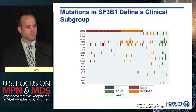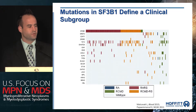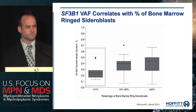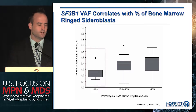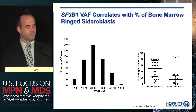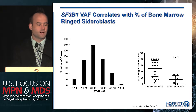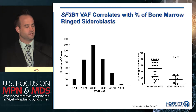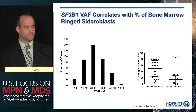SF3B1 defines a molecular and clinical subgroup with a relatively indolent prognosis. SF3B1 is strikingly concordant with the presence of ring sideroblasts. Malcovati looked at the allele burden of SF3B1 and found that only patients with a lower VAF sometimes have ring sideroblasts less than 15%, which is diagnostically relevant. A higher allele burden of SF3B1 predicts for a higher percentage of bone marrow ring sideroblasts, with the few patients lacking ring sideroblasts having a low VAF.